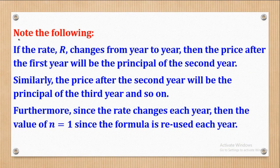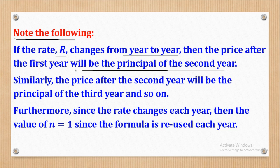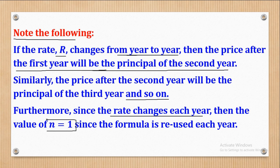Before the next example, note the following: if the rate changes from year to year, then the price after the first year will be the principal for the second year, and so on. Since the rate changes each year, the value of N will equal 1, as the formula is reused each year. If the rate changes after every 2 years, N is 2; after 3 years, N is 3, and so on.